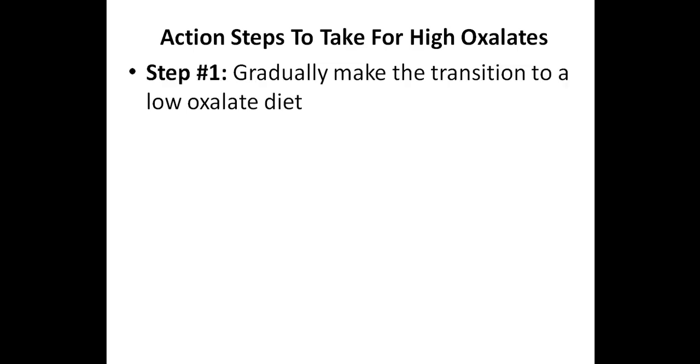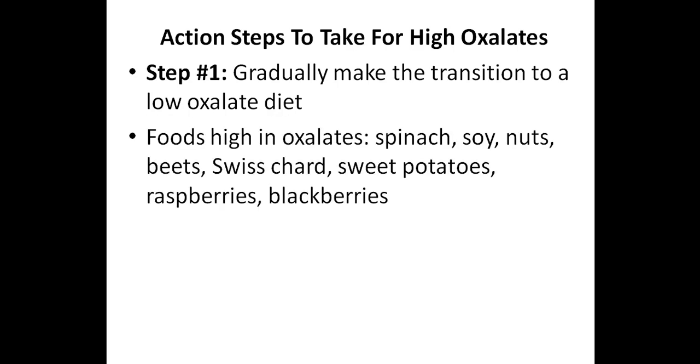If you have tested high for oxalates on an organic acids test, then I would recommend to take the following action steps. So step number one is to gradually make the transition to a low oxalate diet. And as I mentioned earlier, you're not going to eliminate all the high oxalate foods, but you want to minimize your consumption of high oxalate foods. And some of the foods high in oxalates include spinach, soy, nuts, beets, swiss chard, sweet potatoes, as well as raspberries and blackberries.